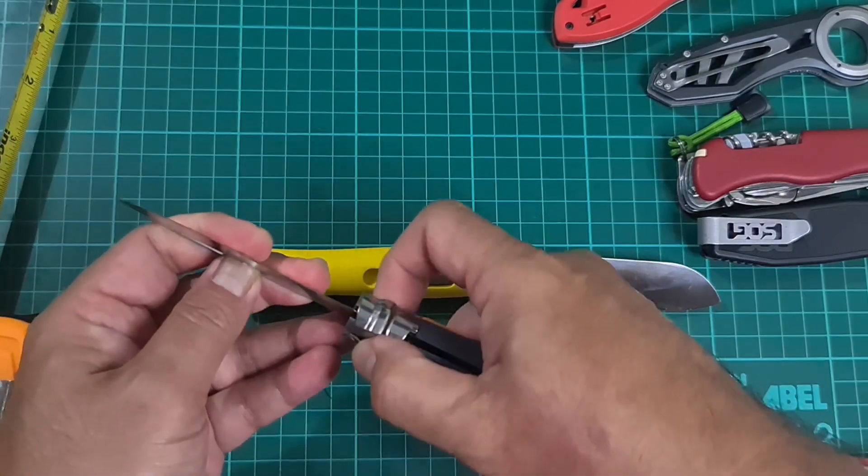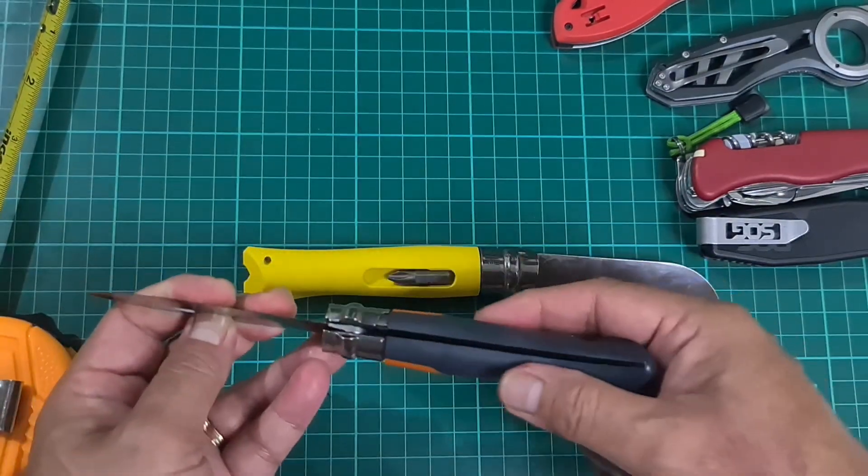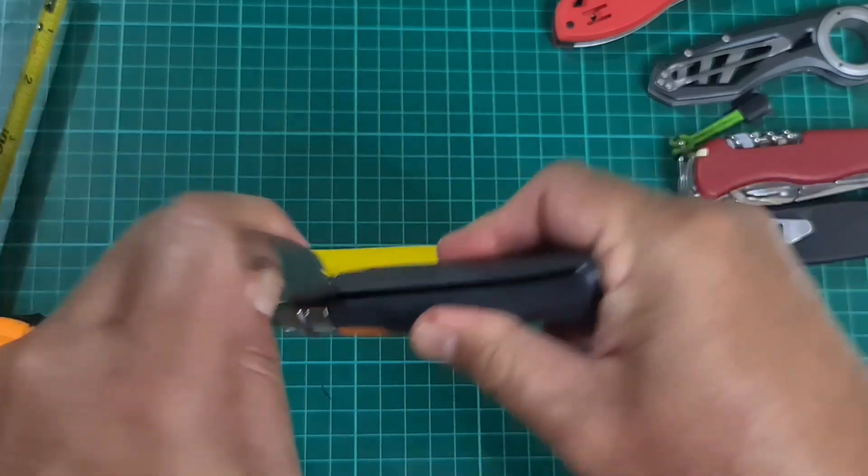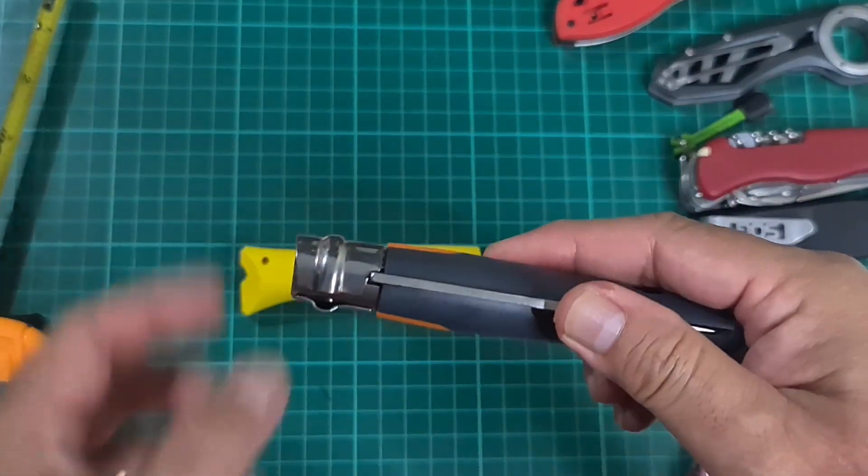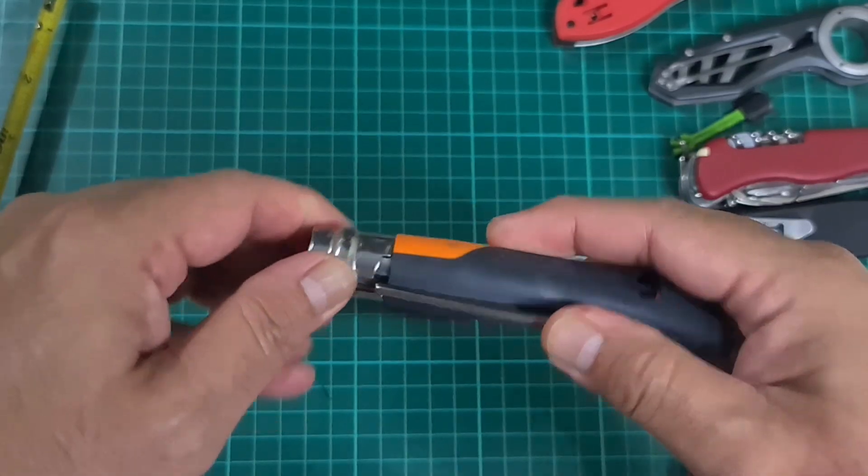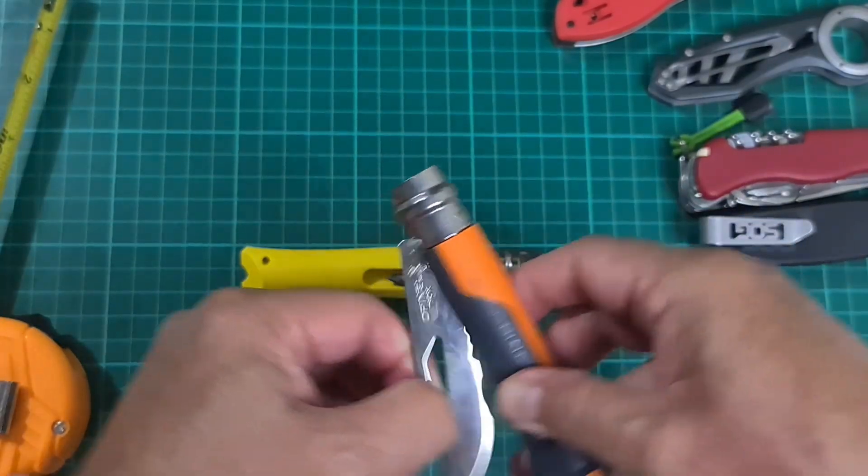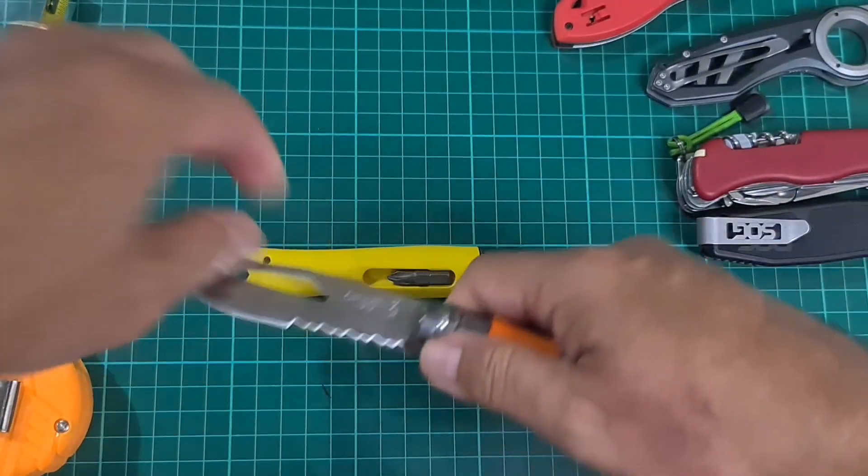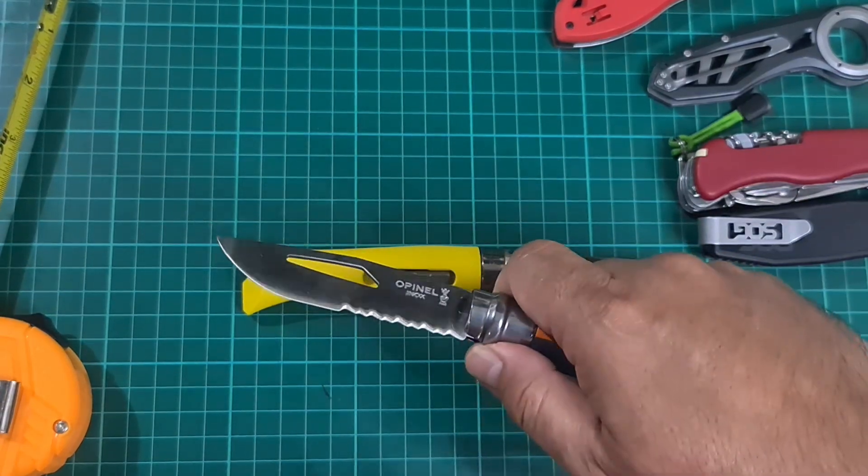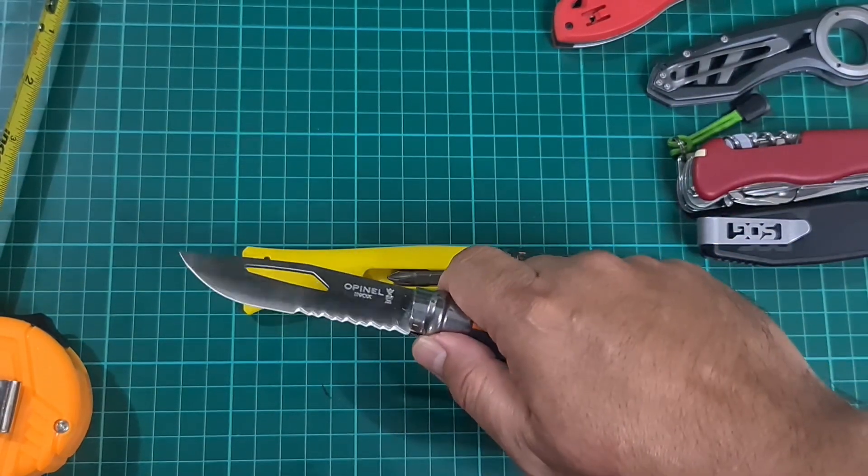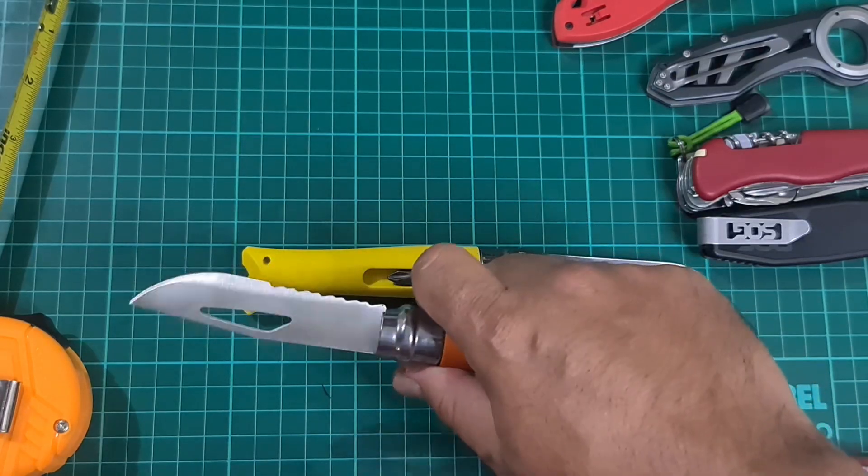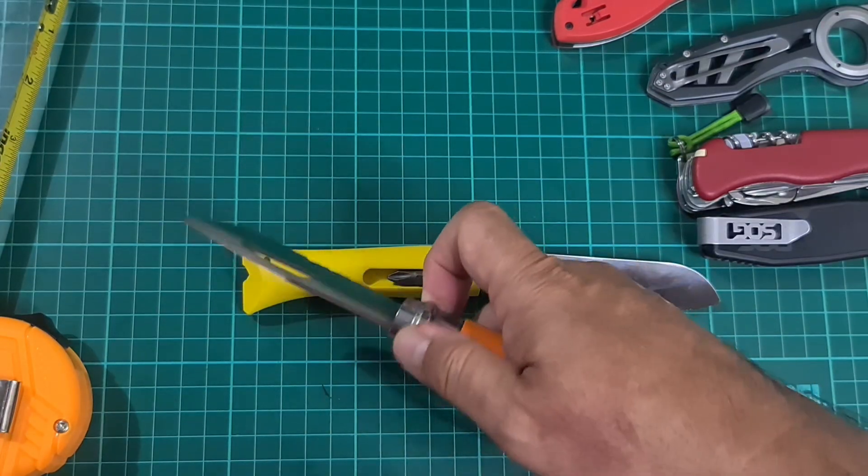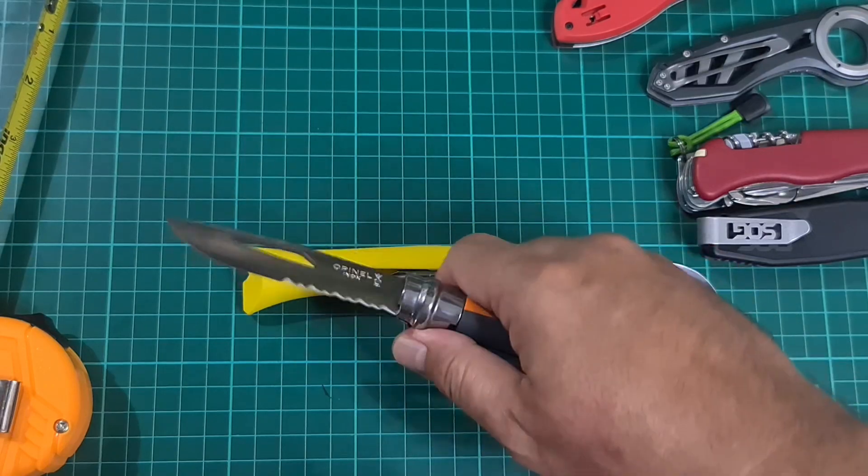To close the knife, you slip the Virobloc in the open position and close it. Still have to break this in. You could lock it as well. It's a really simple design. These are cheap knives but they're not built cheap. These are really good knives as Opinel makes them.